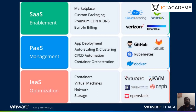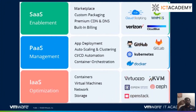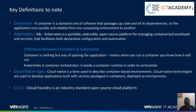Cloud is essentially services as a service — a set of services available in the internet that you consume as required. If you want to host an application, you go for IaaS and create a virtual machine. If you want to develop and deploy an application, you go to PaaS, using containers, Docker, and Kubernetes. If you need a ready-made software like a CRM — customer relationship management application — you take it as SaaS. Those are the different ways of managing your cloud needs.